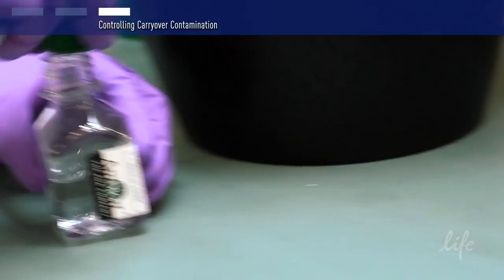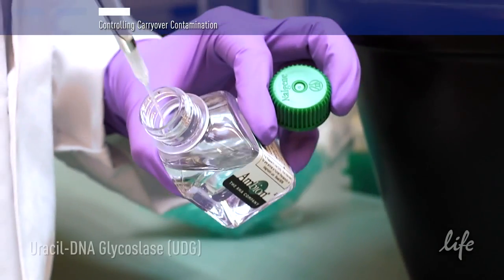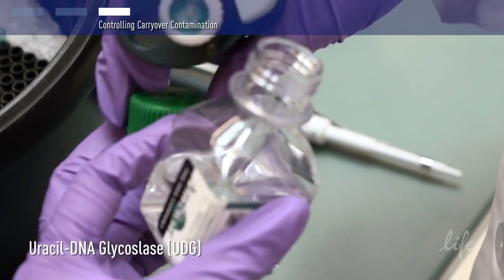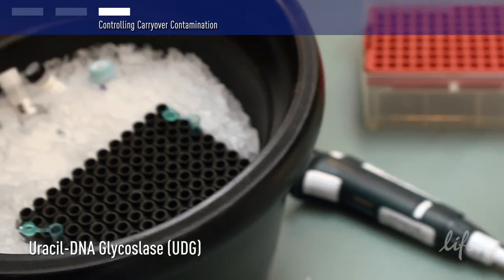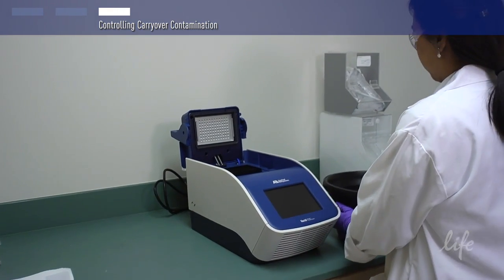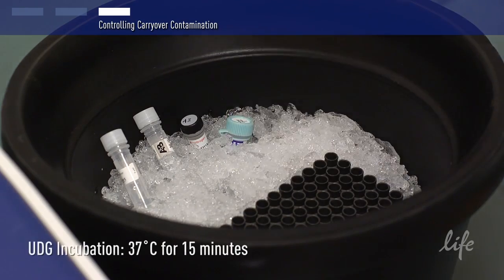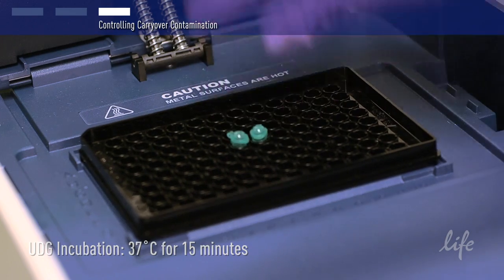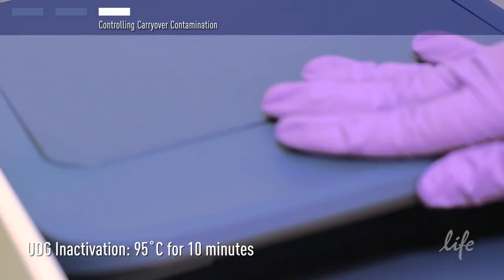See the separate video on how to set up a standard PCR reaction. One unit of uracil DNA glycosylase or UDG is added to each PCR reaction. Change the thermocycler program to include an initial incubation of 15 minutes at 37 degrees followed by 10 minutes at 95 degrees.